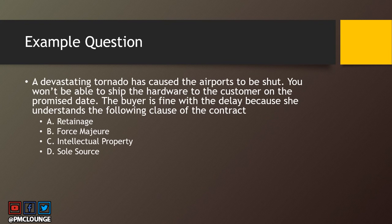Here's a sample question: a devastating tornado has caused the airports to be shut down — you won't be able to ship the hardware to the customer on the promised date. The buyer is fine with the delay because she understands a specific clause of the contract. The answer is force majeure. Other options include written age, intellectual property, and sole source — this is the kind of question that may show up in your PMP exam.